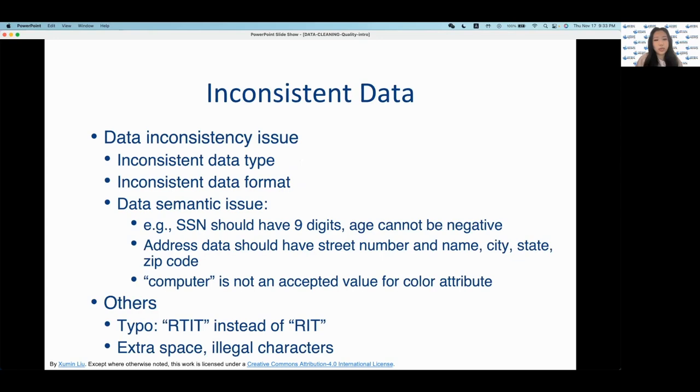Data inconsistent issues can be both semantic or syntactic. They are application-specific and need to be explicitly defined. Inconsistent data can be seen through inconsistent data types, inconsistent data formats, data semantic issues, and typos from human inputting errors. And you can see here some of the examples could be SSN, address data, and then also some typos could be writing RTIT instead of RIT.